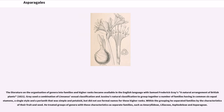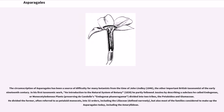The literature on the organization of genera into families and higher ranks became available in the English language with Samuel Frederick Gray's A Natural Arrangement of British Plants (1821). Gray used a combination of Linnaeus's sexual classification and Jussieu's natural classification to group together families having in common six equal stamens, a single style, and a perianth that was simple and petaloid, but did not use formal names for these higher ranks. He treated groups such as Amaryllidii, Liliaceae, Asphodeliii, and Asparagus as separate families. The circumscription of Asparagus has been a source of difficulty for botanists from the time of John Lindley (1846), an important British taxonomist of the early 19th century.